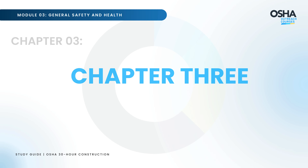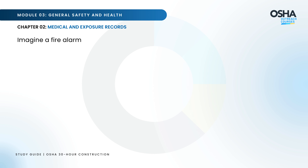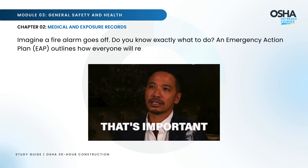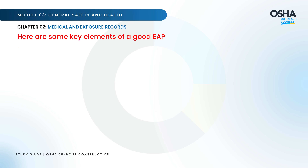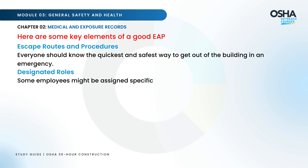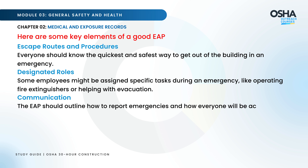Let's focus on the final chapter: Emergency Action Plans — be ready for anything. Imagine a fire alarm goes off; do you know exactly what to do? An emergency action plan outlines how everyone will respond during an emergency. Key elements include escape routes and procedures so everyone knows the quickest and safest way out, designated roles such as operating fire extinguishers or helping with evacuation, and clear procedures for reporting emergencies and accounting for everyone afterward.